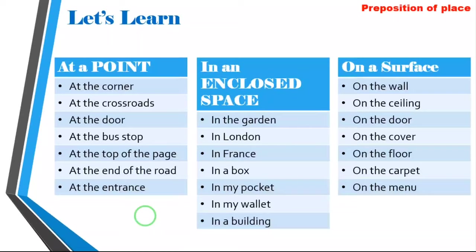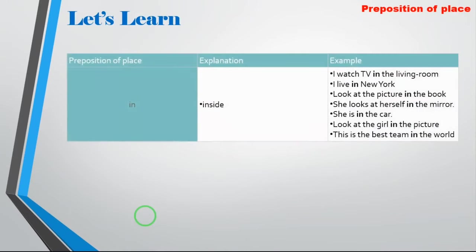Teacher, wait — you've given me examples, but I don't know how to use them. Right, I haven't taught you how to use them yet. Now let's learn when to use them. So look at this. First one: 'in' means inside. For example, I watch TV in the living room. We use 'in' when referring to a place that is inside — inside the house, inside the box, inside the forest.